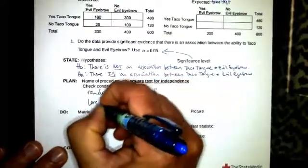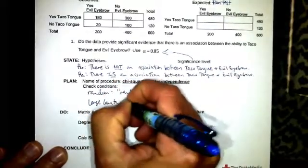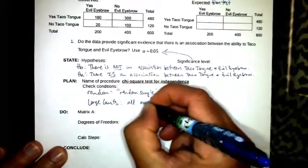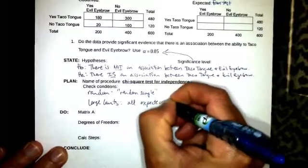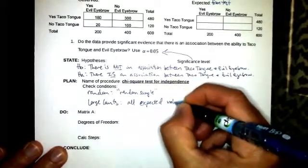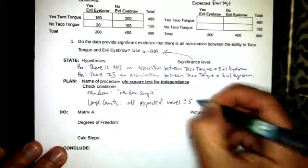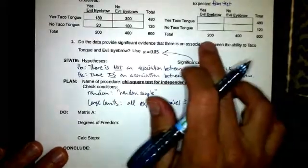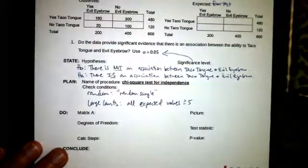And then for our large counts, we need to make sure that all expected values are greater than or equal to five, and we'll check that once we run the test and make sure that is correct.